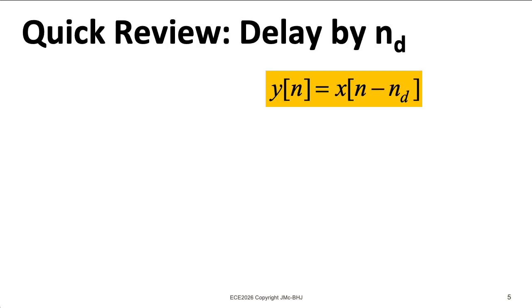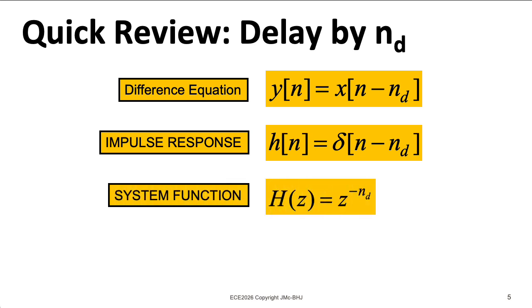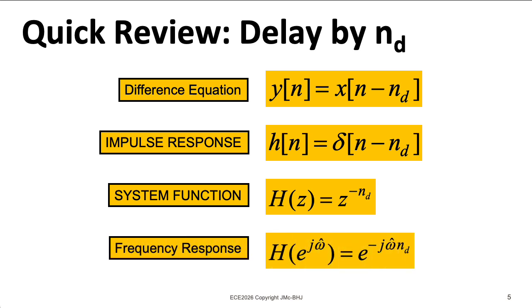Before we go on, let's review some ideas relating to delay systems. Delaying a system by n_D corresponds to a system that has an impulse response of delta[n - n_D], and it has a system function that's z to the minus n_D. And to get the frequency response, we plug e to the j omega hat in for z.